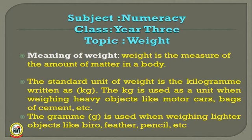When we move to the gram: the gram is another unit used for measuring weights. The gram is used when weighing lighter objects, like a biro, feather, pencil, etc. The symbol for the gram is lowercase g. It is used when weighing lighter objects.